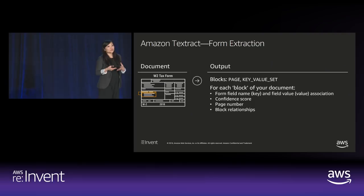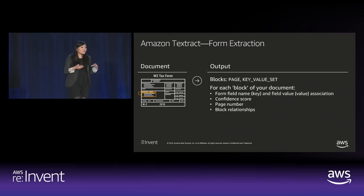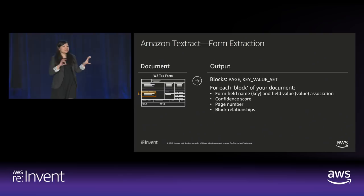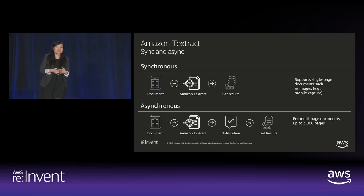Similarly we have our form extraction API. You can pass a tax form — and within that form you may need text extraction, table extraction, and form extraction all at once. To us, a form is elements that are closely or tightly associated — like a name 'Michael' associated with a key 'Name.' These have a relationship to each other. You use the AnalyzeDocument API and provide 'FORMS' as a feature type input parameter.